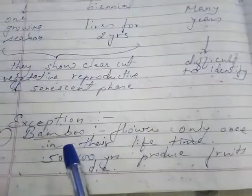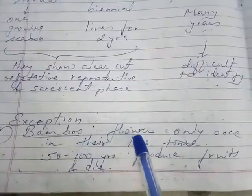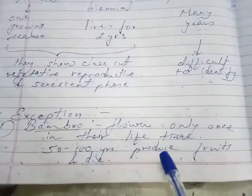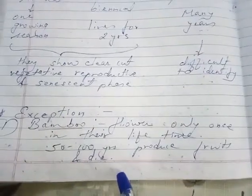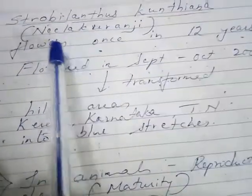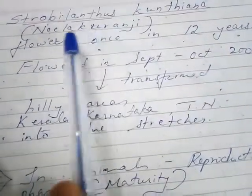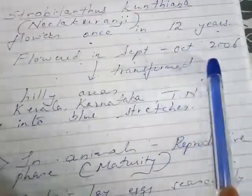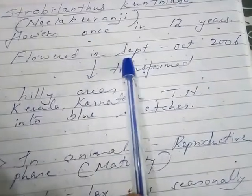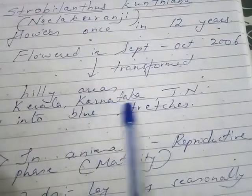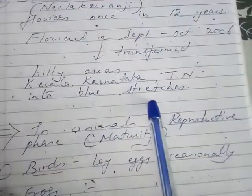As an exception, bamboo flowers only once in its lifetime — that is once in 50 to 100 years — after which it produces fruits and dies. In the case of Strobilanthus kunthiana, known as Neela Taranji — neela meaning blue — it flowers once in 12 years. In 2006, it flowered during September and the hilly areas of Kerala, Karnataka, and Tamil Nadu turned into blue stretches.